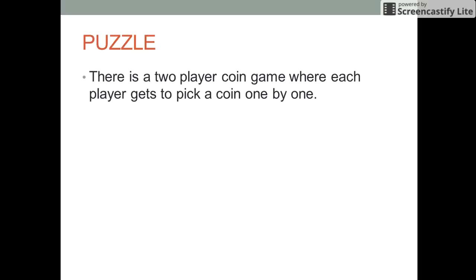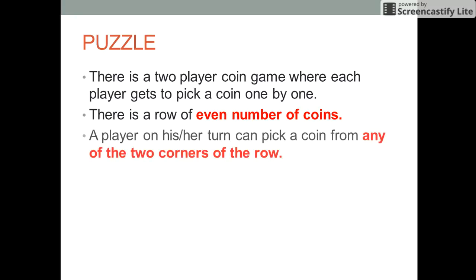There is a two-player coin game where each player gets to pick a coin one by one. There is an even number of coins in a row arranged in front of the players. A player on his or her turn can pick up any coin from any of the two corners of the row only.